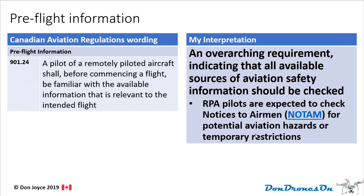All right, into the module. The first of the regulations is 901.24, Pre-Flight Information. This is more or less an overarching requirement indicating that all available sources of aviation safety information should be checked before taking flight. RPA pilots are expected to check what's called the Notices to Airmen, or NOTAM, for potential aviation hazards or temporary restrictions. There's a link there in the soft copy should you choose to purchase it.